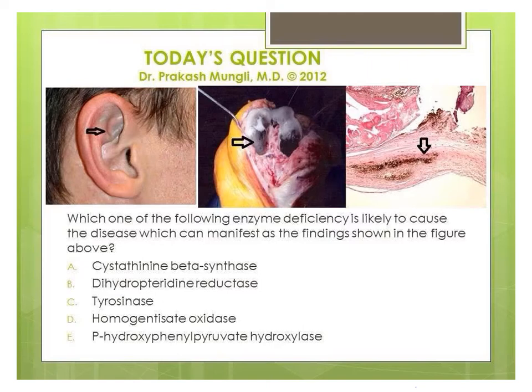Hello everyone, this is Dr. Mungle. Today I'm going to explain a question based on one of the four disorders originally explained by Archibald Garrod, who is considered to be the father of inborn errors of metabolism. He was the very first to explain inborn errors of metabolism, and I will be explaining the answer and that disorder in a little bit of detail.